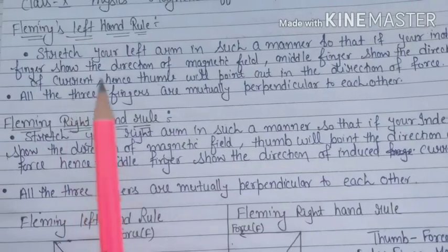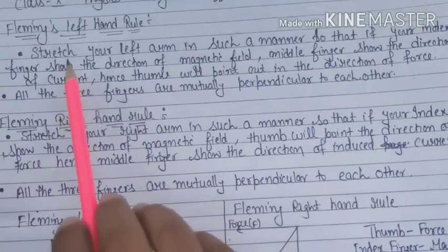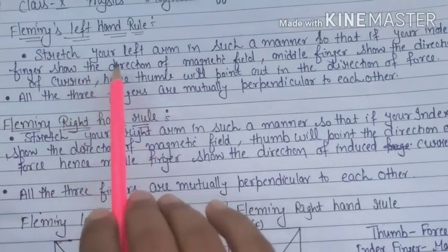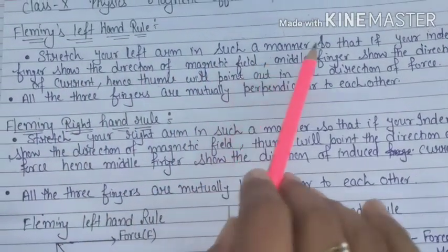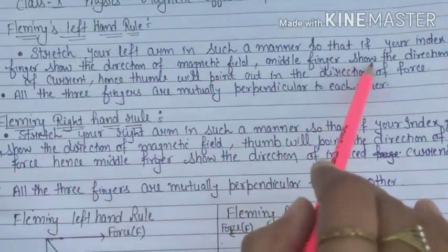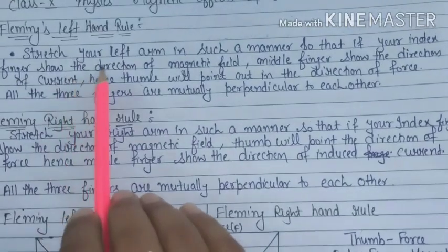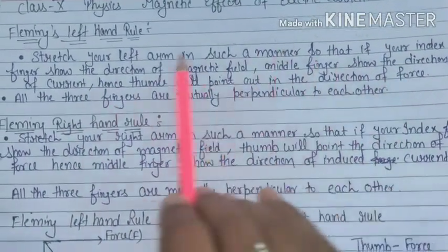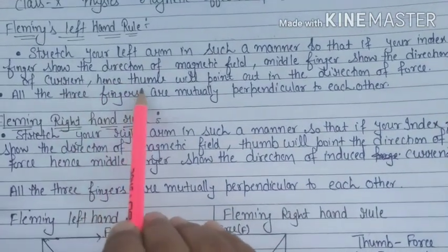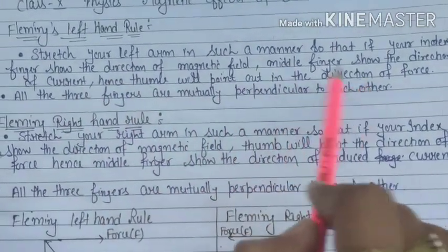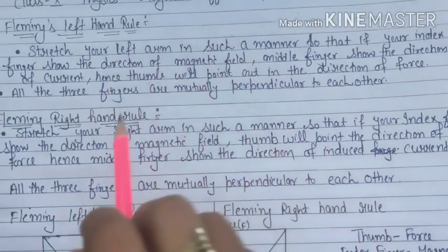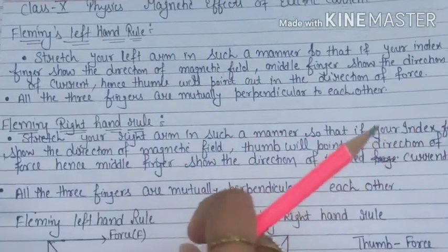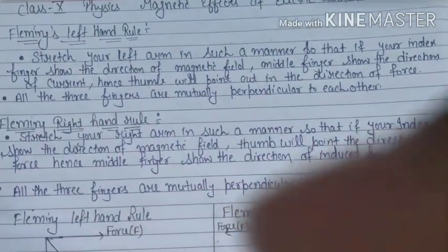So let's start. The first one is Fleming's Left Hand Rule. Stretch your left arm in such a manner so that if your index finger shows the direction of the magnetic field, the middle finger shows the direction of the current, then the thumb will point out in the direction of the force.